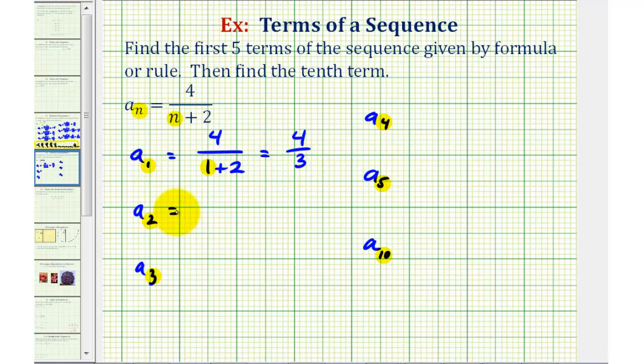And then for a sub two, we'll substitute two for n, so we would have four divided by two plus two. This would be four over four, which is positive one.